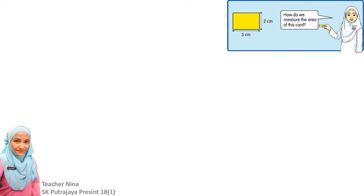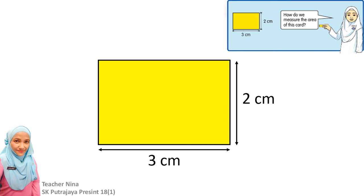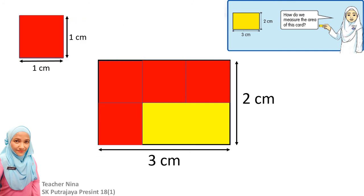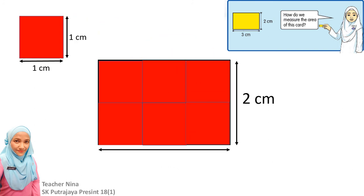Now, I hope you still remember how we measure the area of a regular surface. For example, this yellow card, which is 3 cm by 2 cm. So, what we did last week was we used a red square. These red squares are actually 1 cm long and 1 cm wide. So, it is 1 cm square. Okay, so remember we arrange these red squares on top of the yellow card.